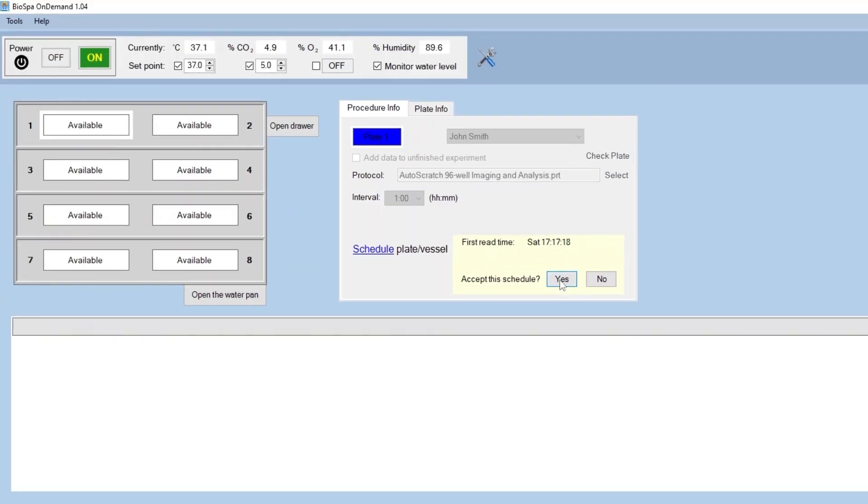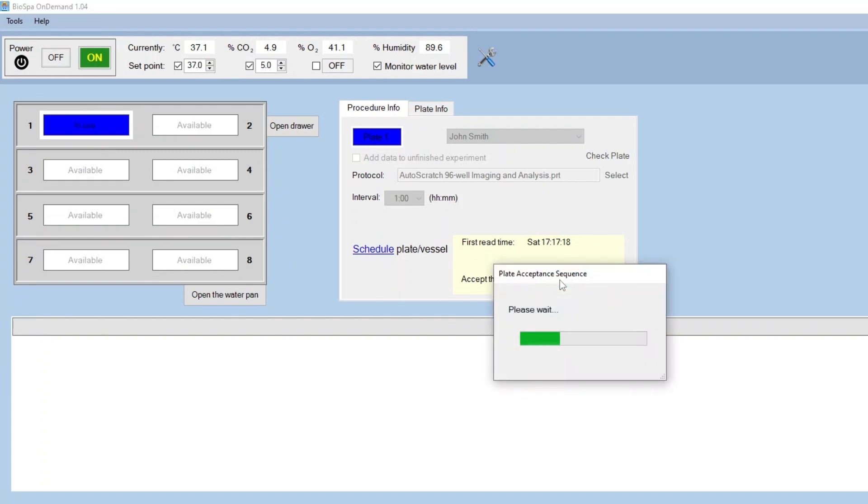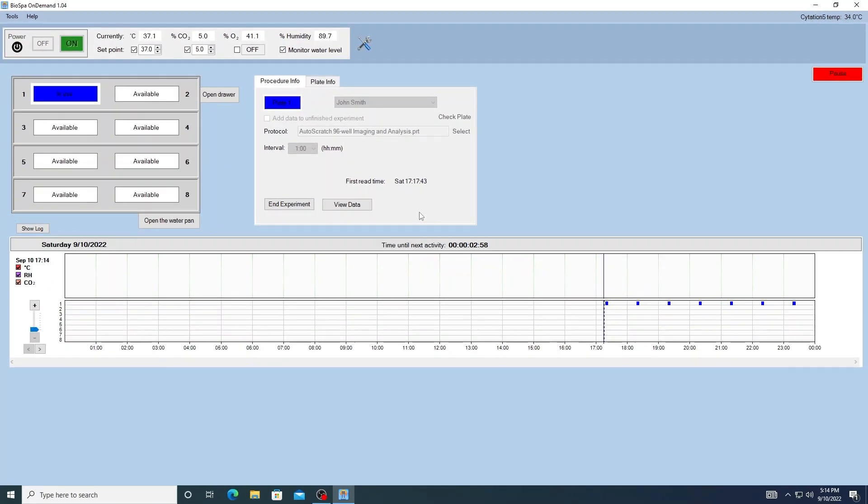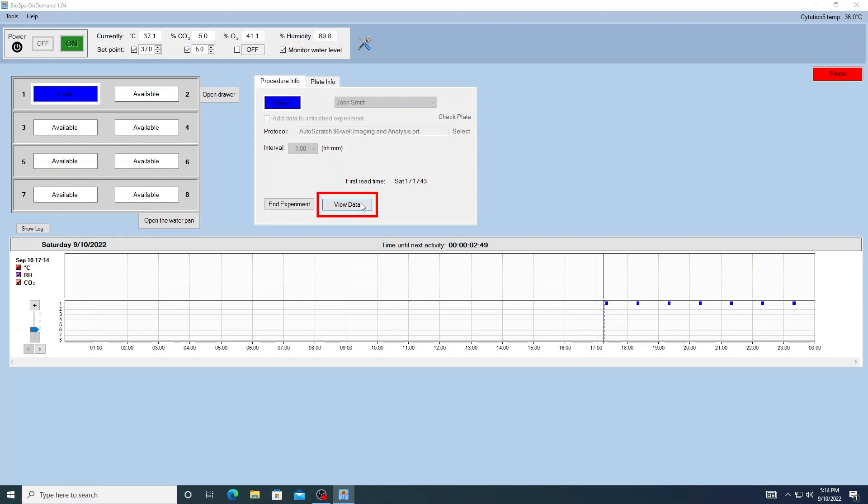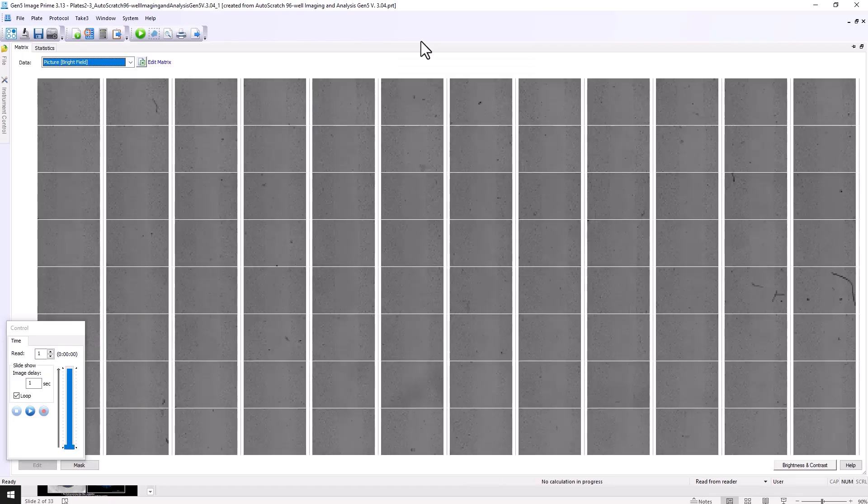Once a new protocol is begun, algorithms insert the new plate appropriately into the existing schedule to preserve the proper processing intervals for all vessels. During processing, users also have the ability to view captured images and analysis for each vessel and time point to monitor the status of the run.